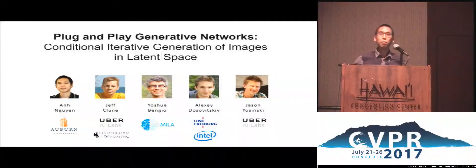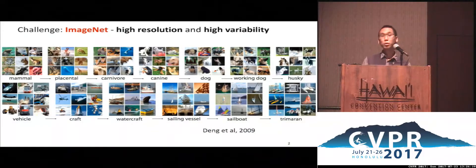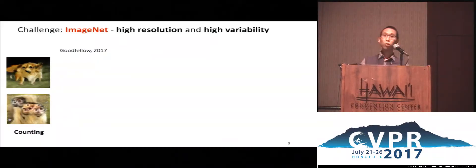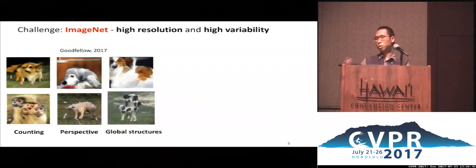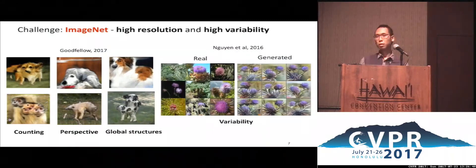Hi, my name is Ang, and I'm going to tell you about plug-and-play generative networks. A grand challenge in the field of image generative modeling is to scale to large-scale datasets like ImageNet, where images are of high resolution and highly variable. State-of-the-art models often struggle in producing images with correct counts, correct perspectives, and coherent global structures. Even when they do generate high-quality images, they often fail to capture the image diversity in the dataset — a problem called mode collapse.